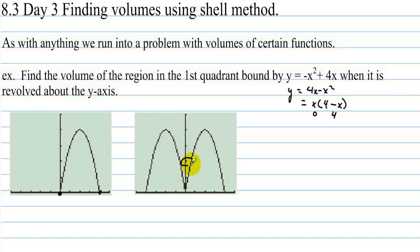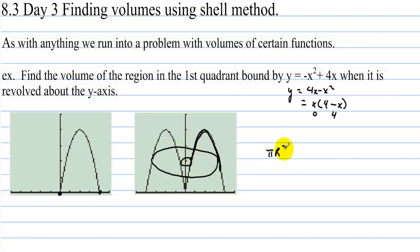The problem with using the washer method here is that we don't have two separate functions — it's the exact same function. So when we compute pi times R squared minus pi times r squared, we get the same values and all the answers come out to zero. We need a different method for solving this.